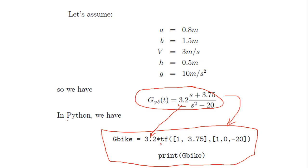You can see that here I have 1, 3.75 in the numerator and 1 in the denominator. I am putting 1 here and 1 here, taking 3.2 outside, so that the polynomials begin with leading coefficient 1. This is one standard way of presenting transfer functions.